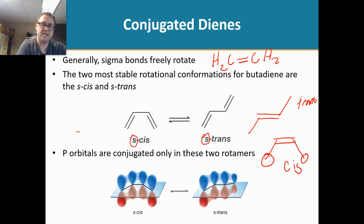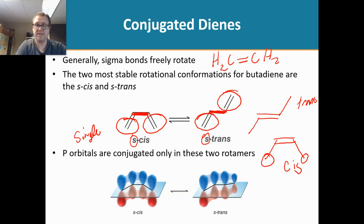Kind of the same idea now with dienes. Other than this S right here, stands for single. And what it's representing is the single bond. Right there, and right there. With respect to the single bond, do you see how the alkenes are on the same side? So that, hence, that will be s-cis. And then over here, we see the double bonds here are on opposite sides of that single bond. So that is going to be s-trans.